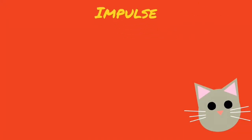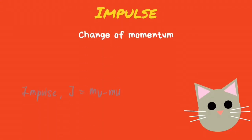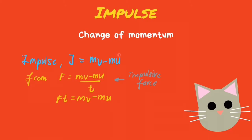Impulse is another concept that we have to learn. Impulse is defined as the change of momentum, and this would be the formula for impulse. You can derive the formula for impulse from the formula of impulsive force. Therefore, we must note that both Ft and mv minus mu are the formula for impulse. We can conclude that impulse is the product of impulsive force and the impact time.